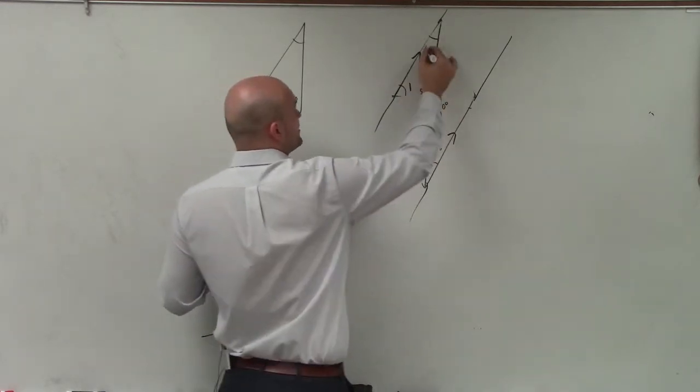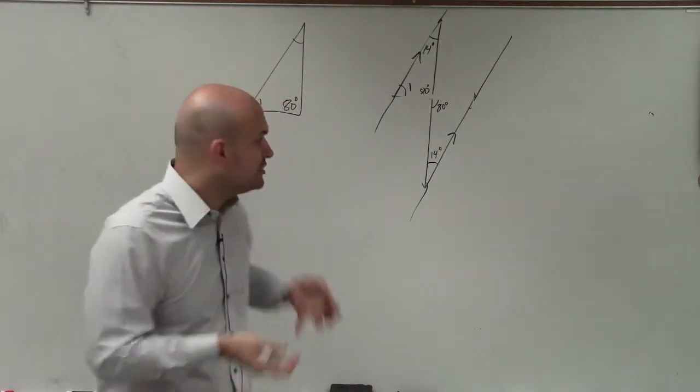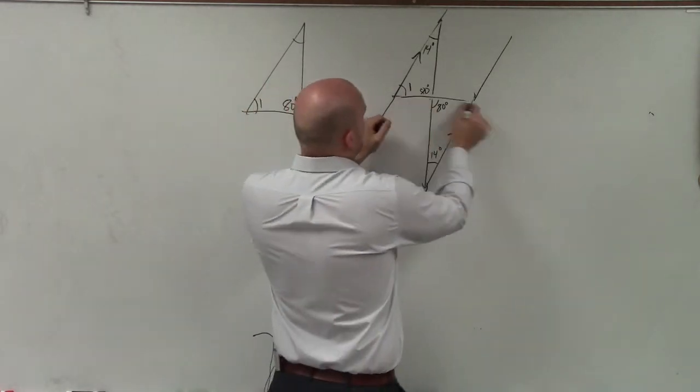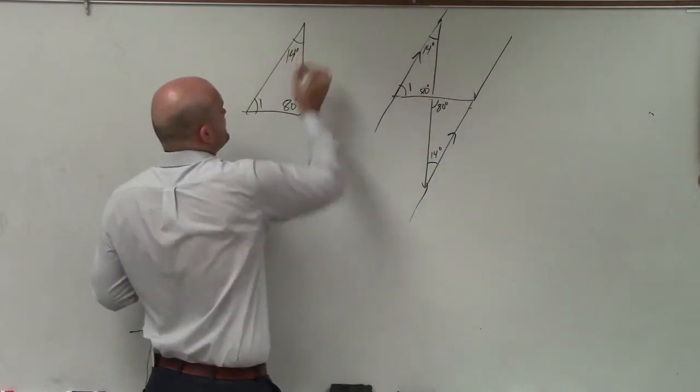Where if this is 14 degrees, that means this angle has to be 14 degrees by alternate interior angles. So I use my angle relationships of vertical angles as well as alternate interior angles to find the measure of this angle.